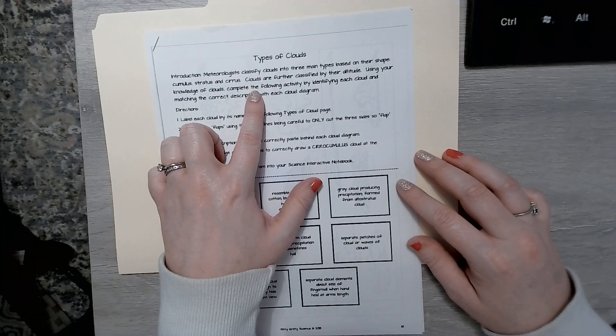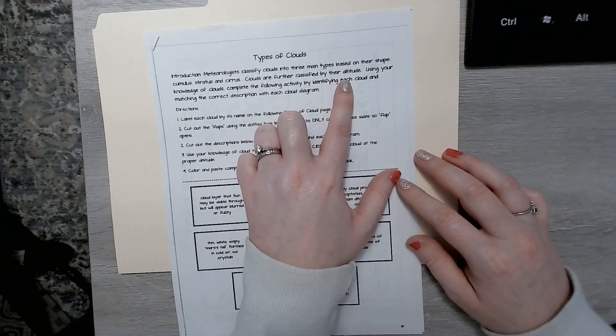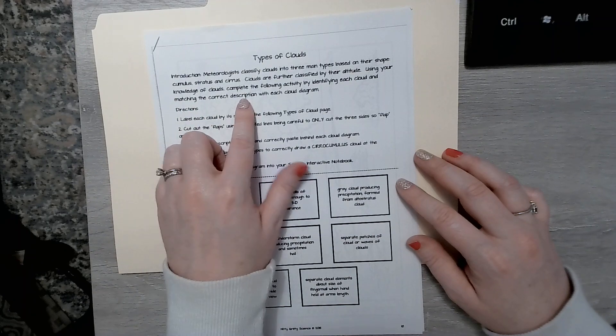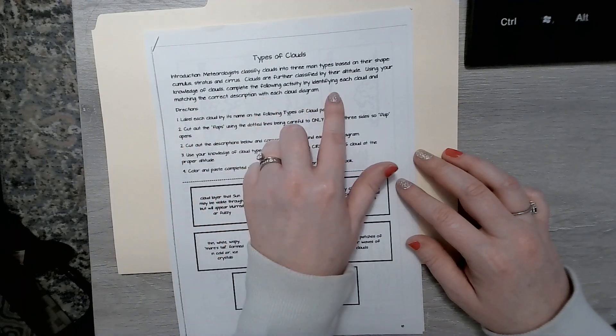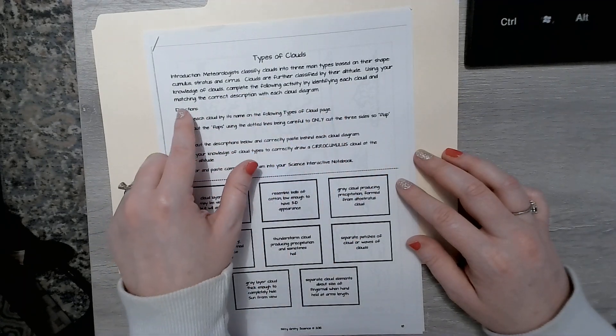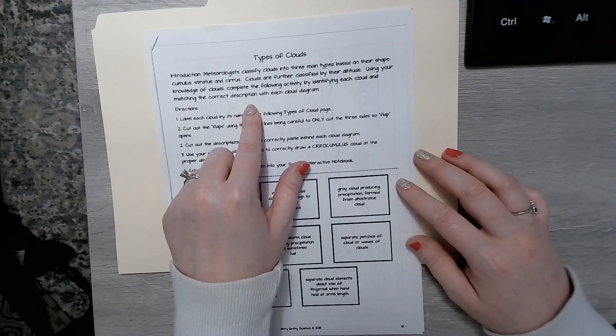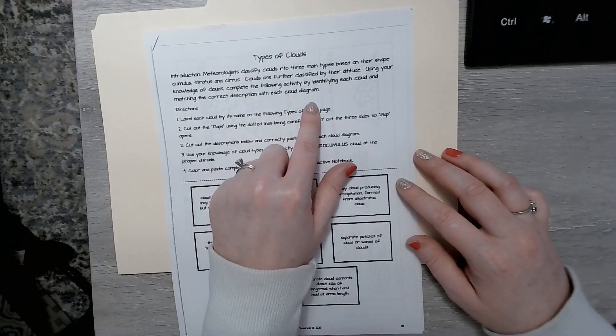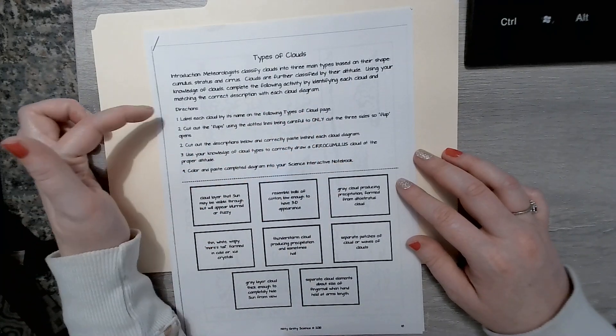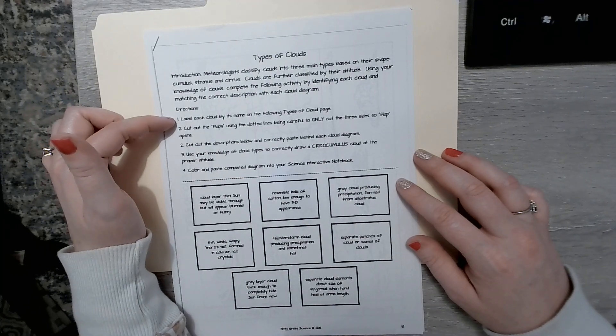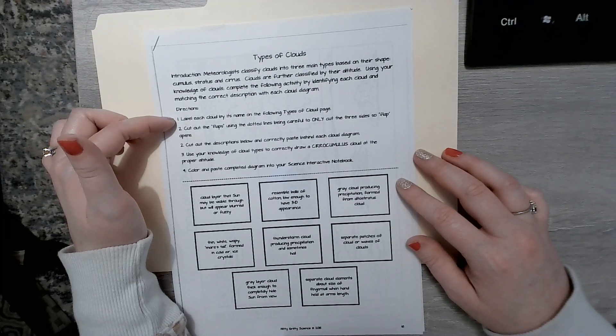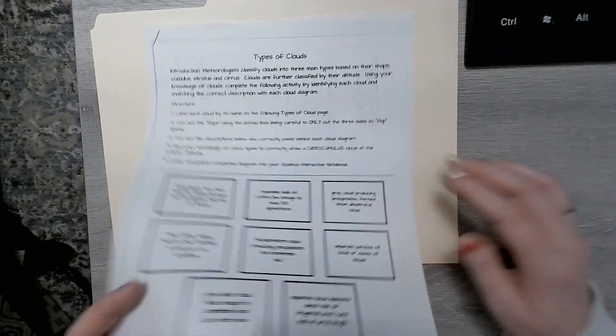Clouds are further classified by their altitudes. Using your knowledge of clouds, complete the following activity by identifying each cloud and matching the correct description with each cloud diagram. So directions: Label each cloud by its name on the following types of clouds page.